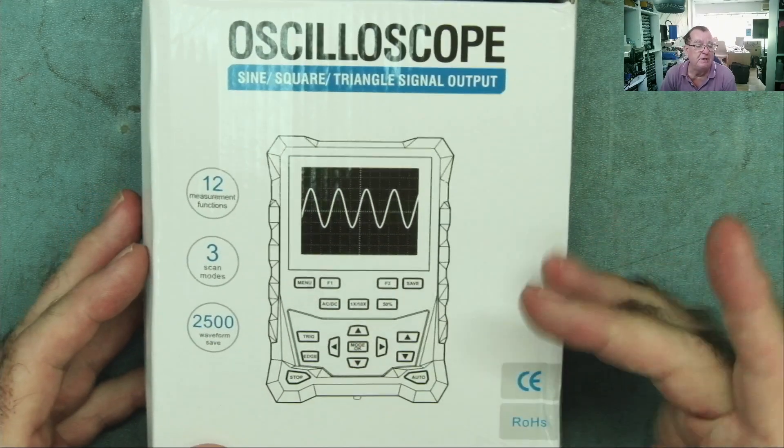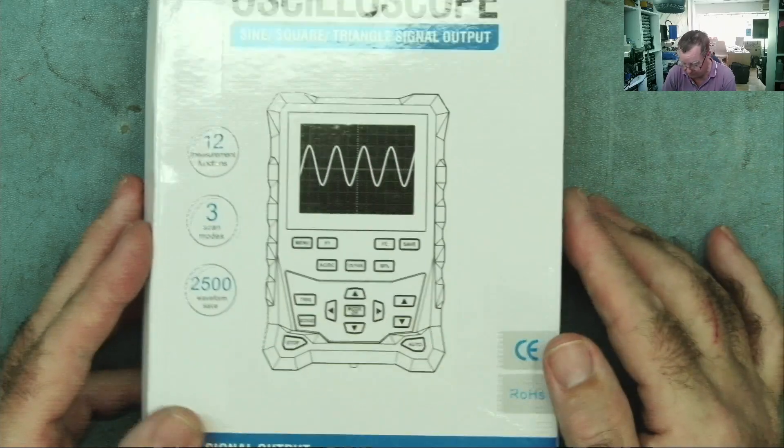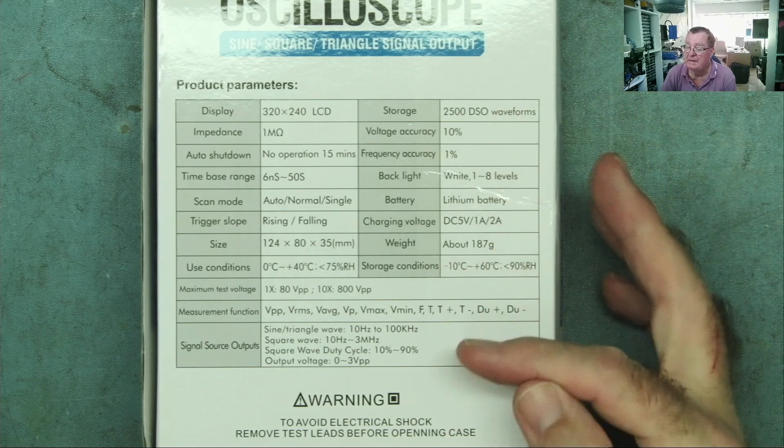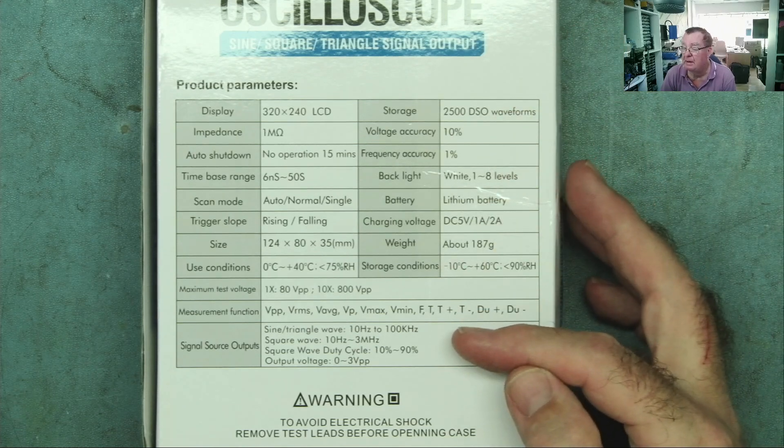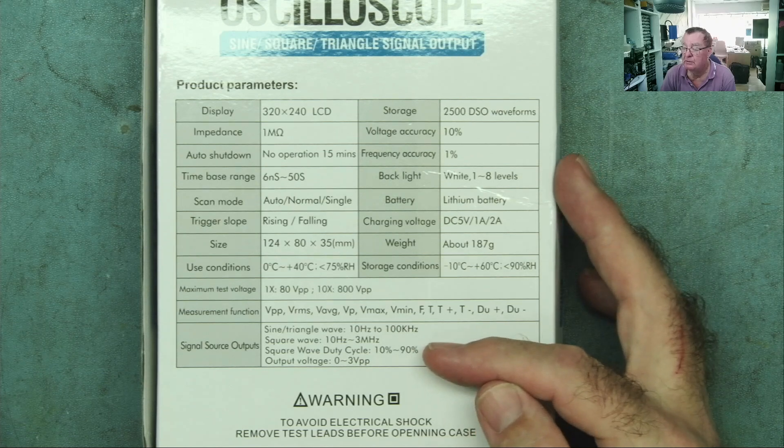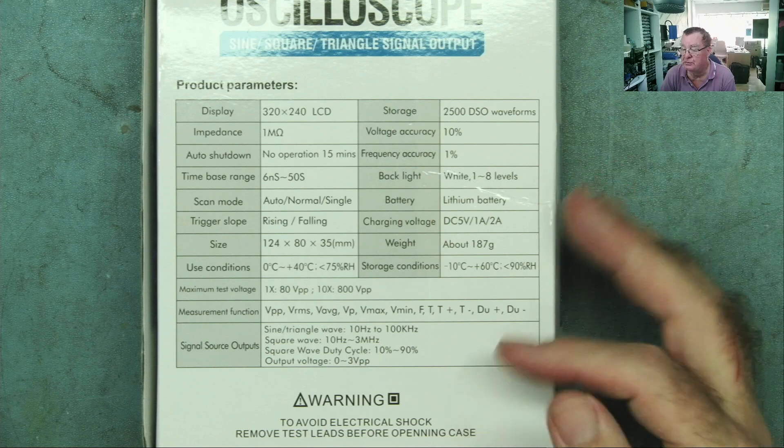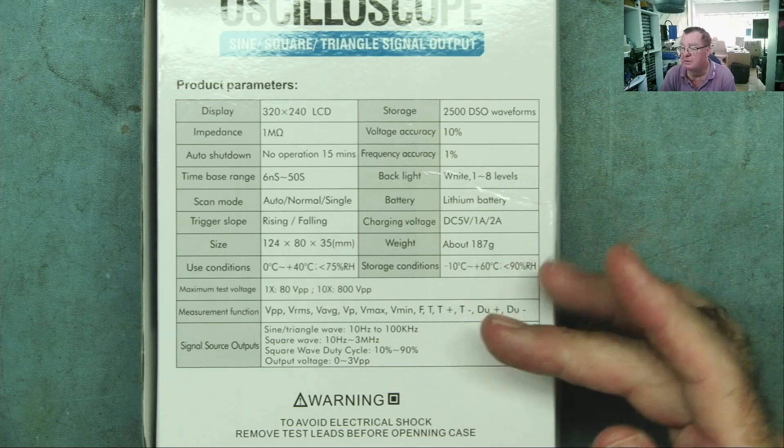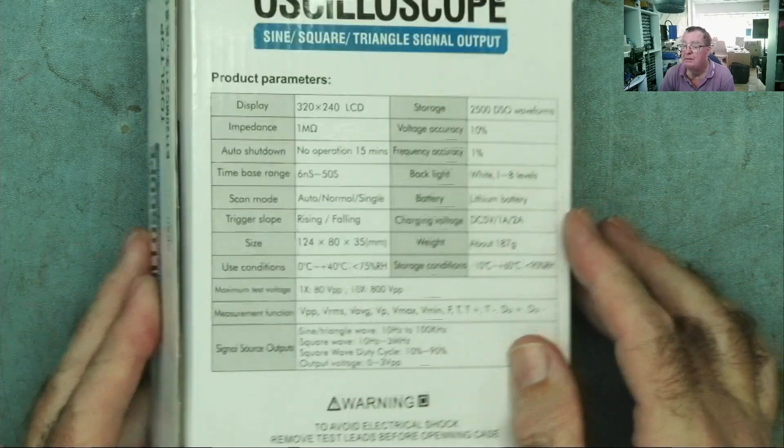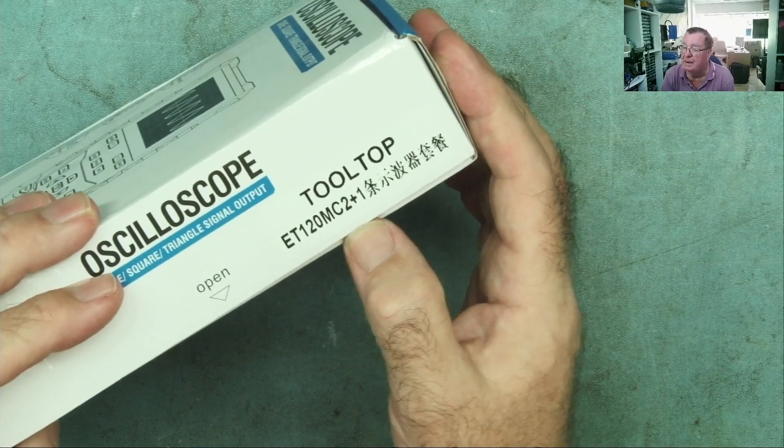This is not a scope meter, it's an oscilloscope with a built-in function generator. The signal generator produces sine, triangle up to 100 kilohertz, square wave 10 Hz to 3 megahertz. You can change the duty cycle, 0 to 3 volts peak to peak, very normal.